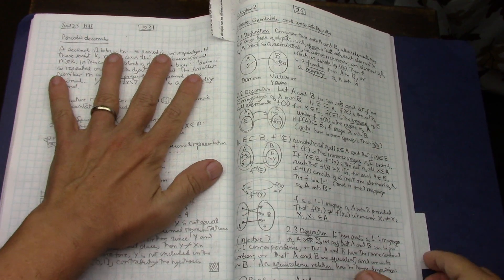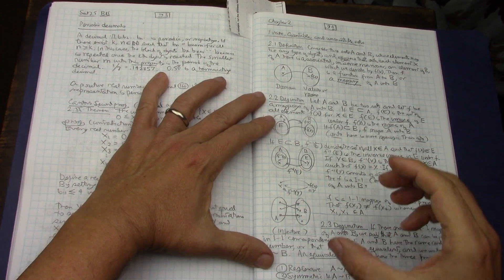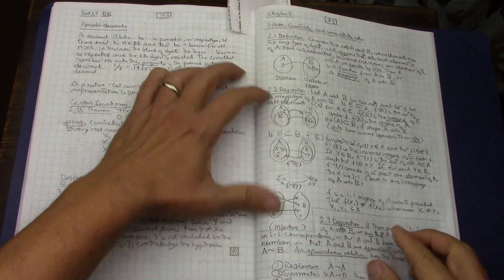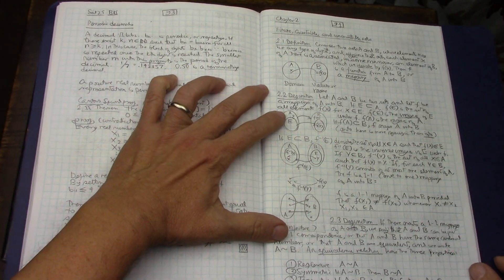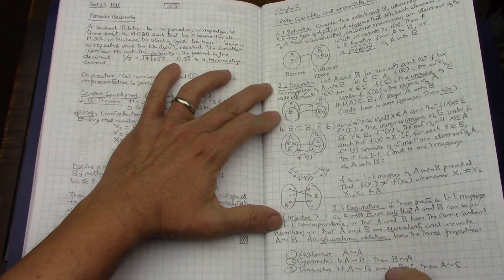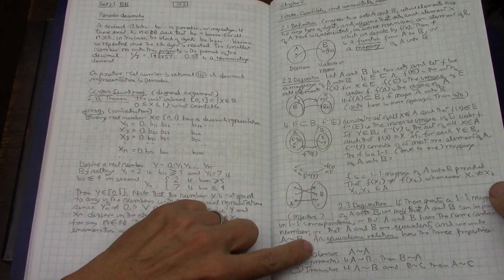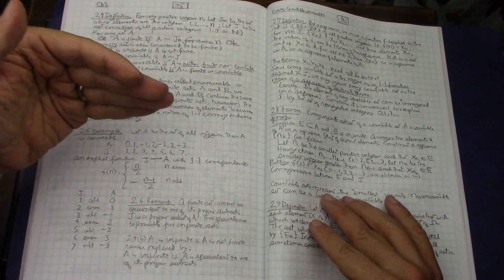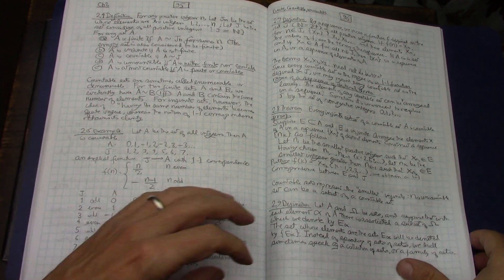So this is in a Bartle and Sherbert video, and I'm separating the videos by books so that in the future somebody can go through it. Whoever's only interested in that book, they don't need to spend all this time looking through a playlist for all of the baby Rudin project. Went through every section, course, equivalence relations.